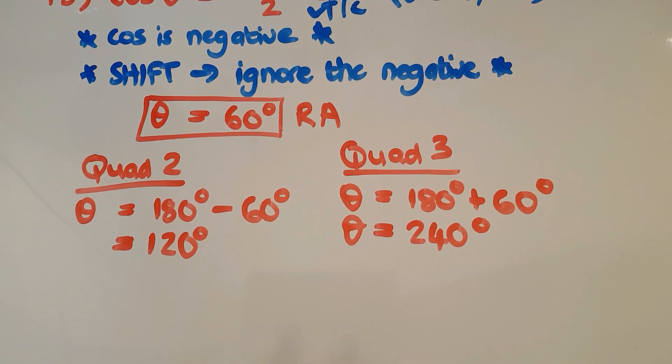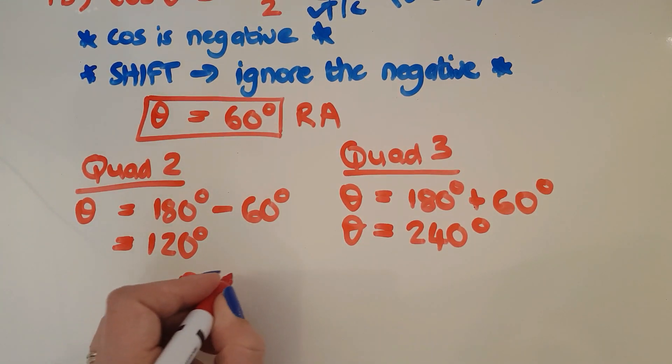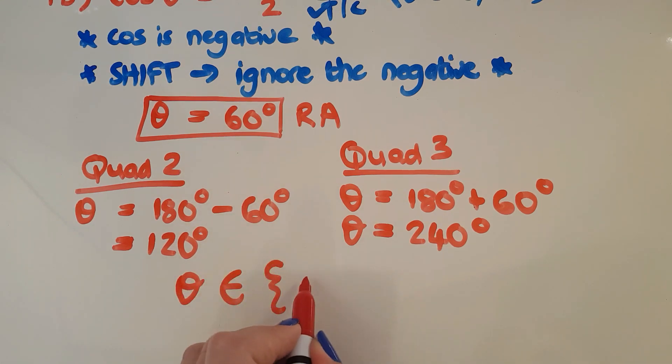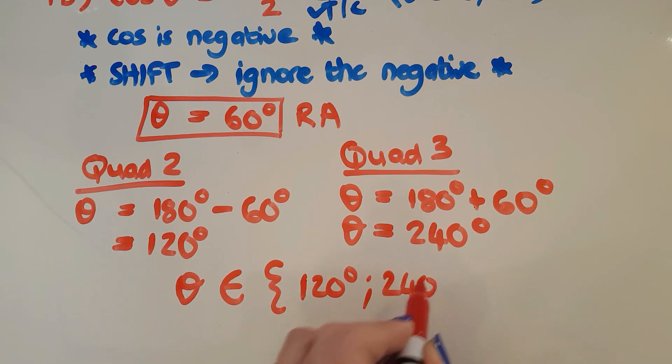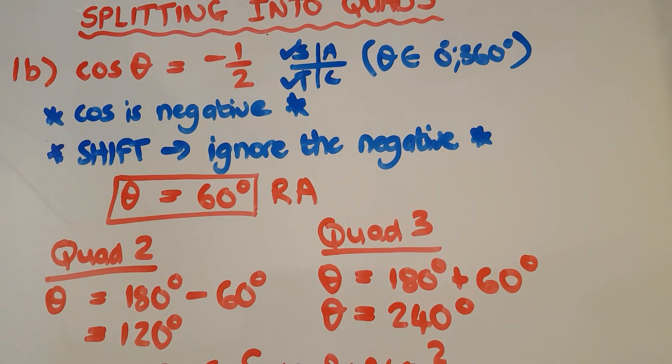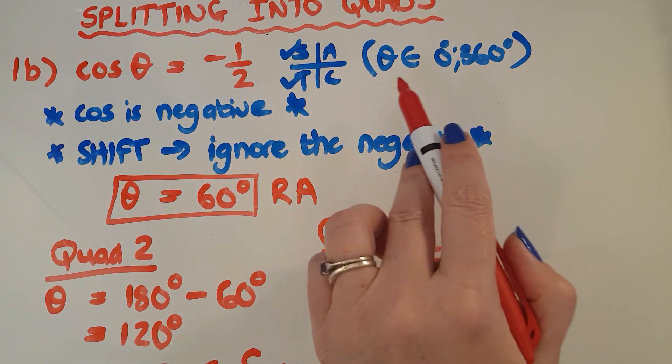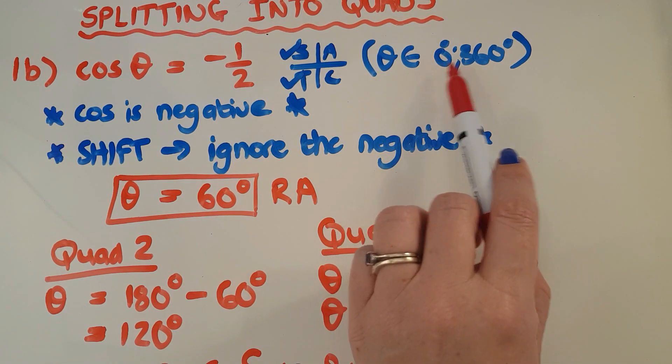I'm going to say, finally, theta is an element of this list of numbers, which is 120 and 240 and nothing else fits into the parameters I was given, which is that theta goes between 0 and 360.